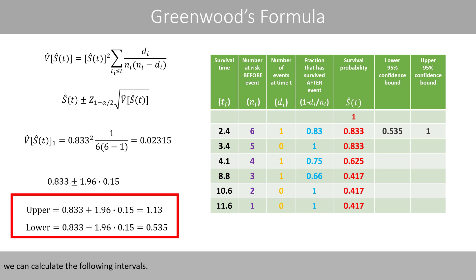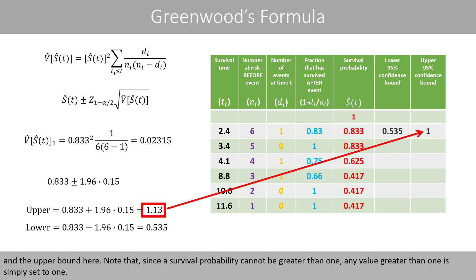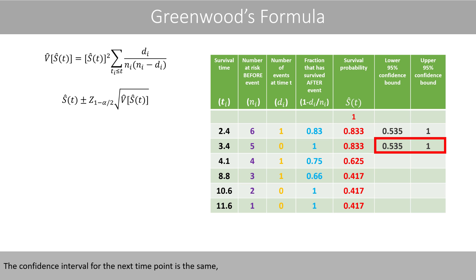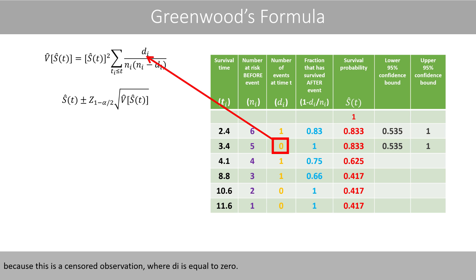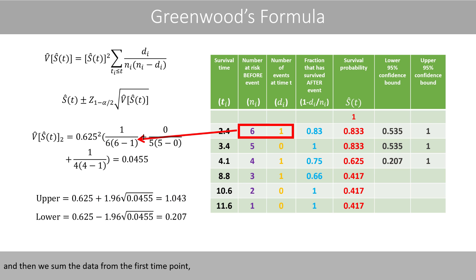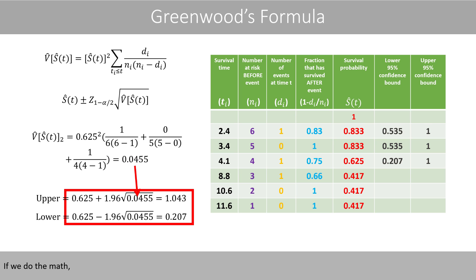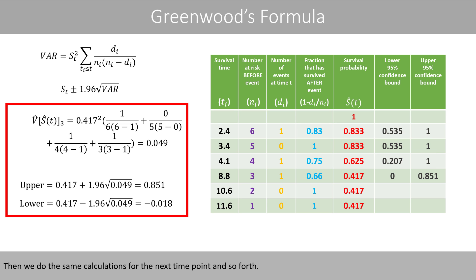If we now plug in the survival probability, we can calculate the confidence intervals. We plug in the lower bound and the upper bound accordingly. Note that since the survival probability cannot be greater than 1, any value greater than 1 is simply set to 1. The confidence interval for the next time point is the same because this is a censored observation where d_i is equal to 0. The confidence interval for the time point where the second event occurs is calculated by plugging in the current survival probability, and summing data from the first time point up to the current time point.